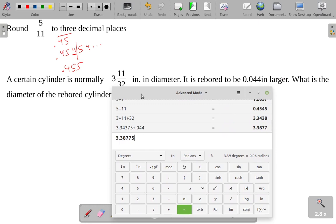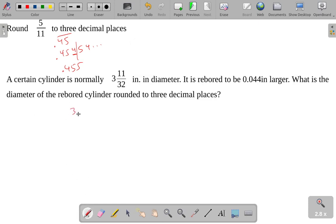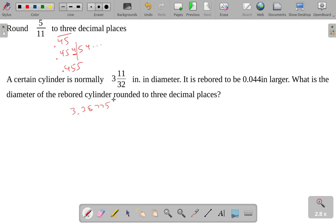And we've got a new number, and we're rounding this to three decimal places, .338775. 3.38775. Okay, there we go. Rounding this to three decimal places means right there, this will be 3.388.